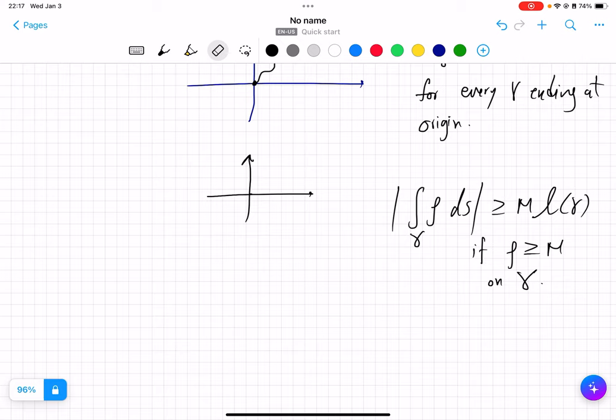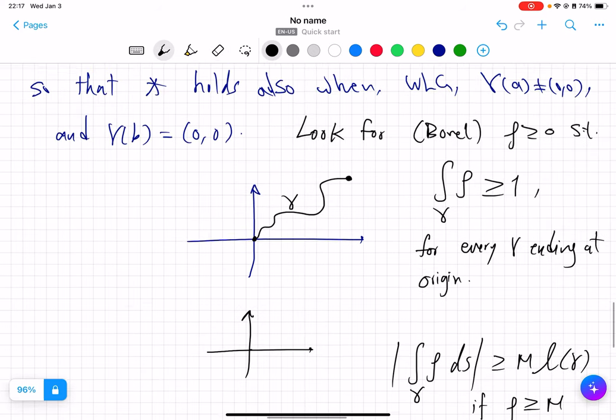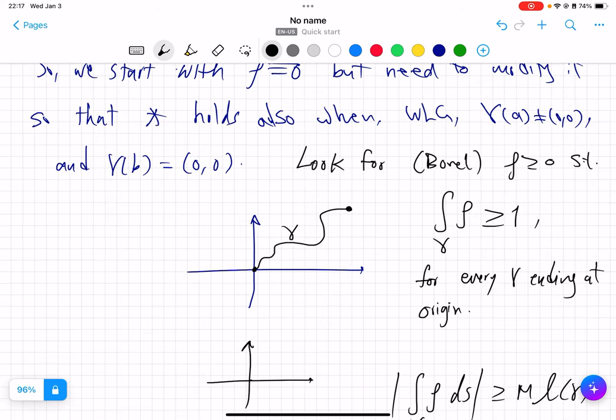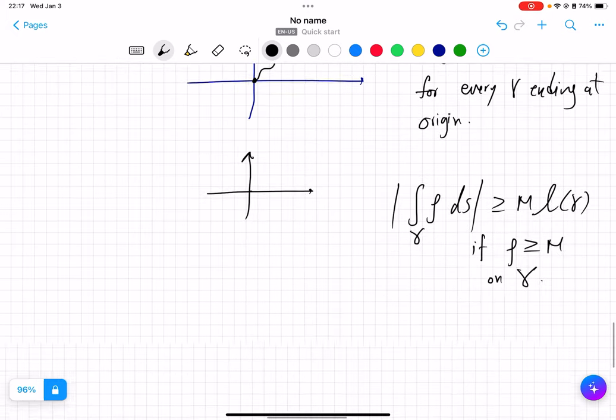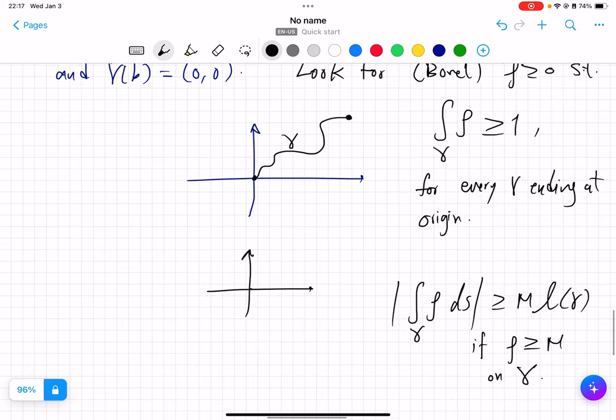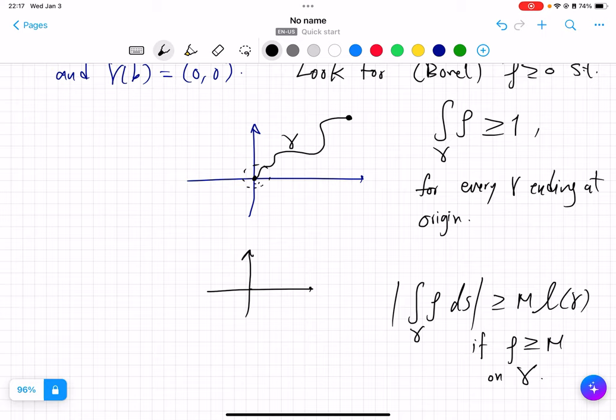And the other observation that can help us is that integral of ρ over γ in general is bigger than m times length of γ if ρ is bigger than m on all of γ. So this is a basic inequality. So knowing the length of a curve can help us decide how much really we want to spend on ρ.